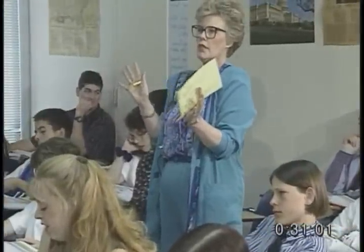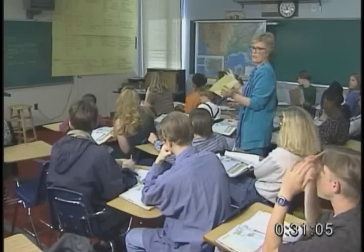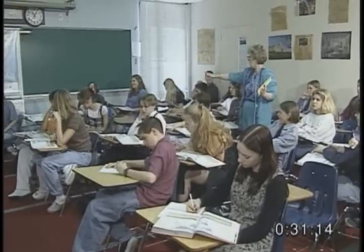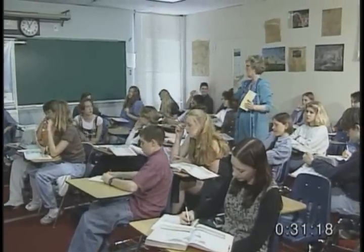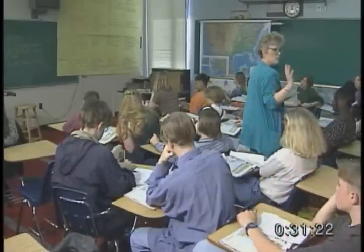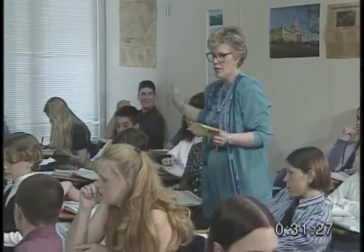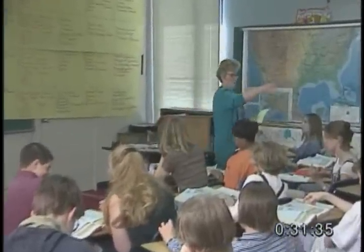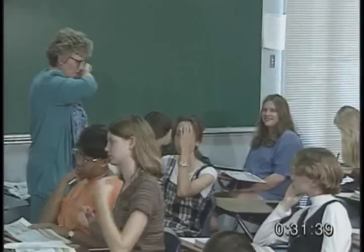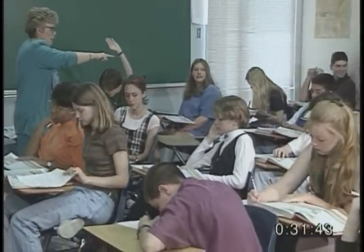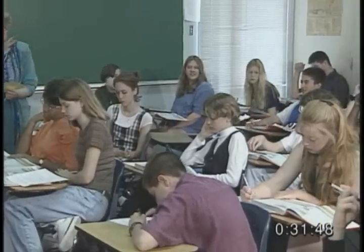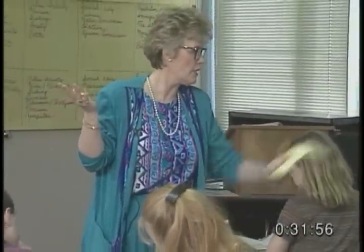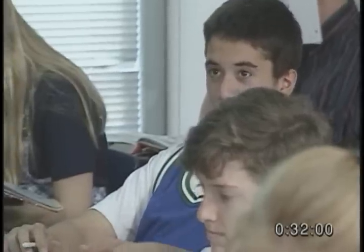Judy points out that California and Florida both have fruit and asks why there is a citrus industry there. Jackie says it's because of the climate. Judy asks what kind of climate allows the citrus industry. Tim answers: "Humid subtropical." Judy explains that humid subtropical means long, humid summers and short, mild winters — that's why they have the citrus industry. She then asks Tim if California has the same climate. He says no — California has tropical and subtropical desert.